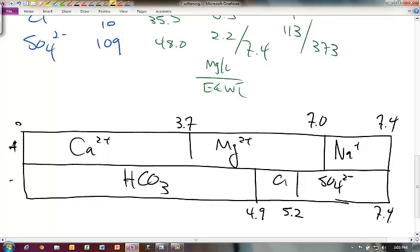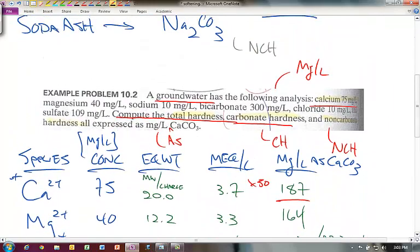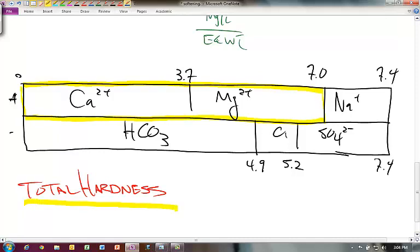Now the next step is to identify these specific processes. We want to compute the total hardness of this. The easiest is just to use the bar diagram. Total hardness in the water is going to be the amount of calcium and magnesium that we have in solution. We can add that up and that gives us 7.0 milliequivalents per liter, and we can also calculate that times 50 as milligrams per liter as CaCO₃.